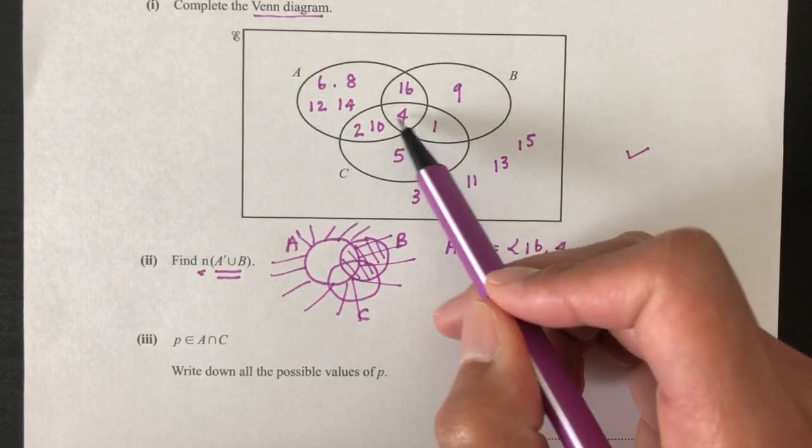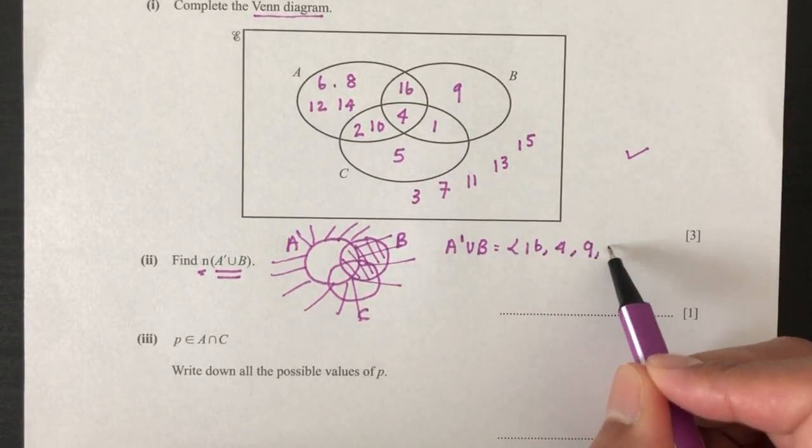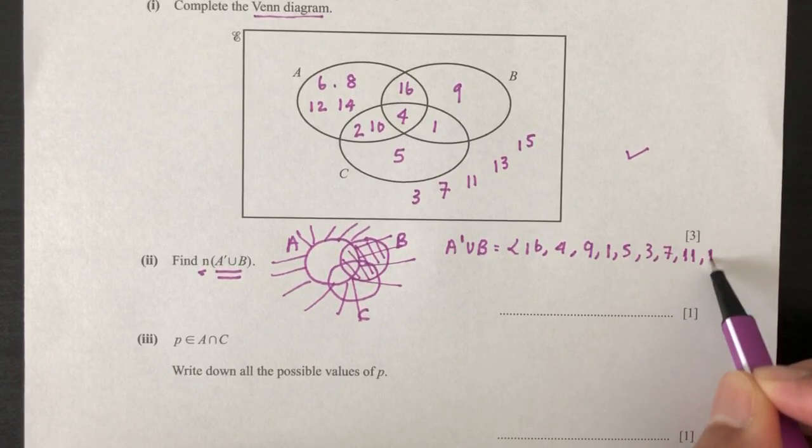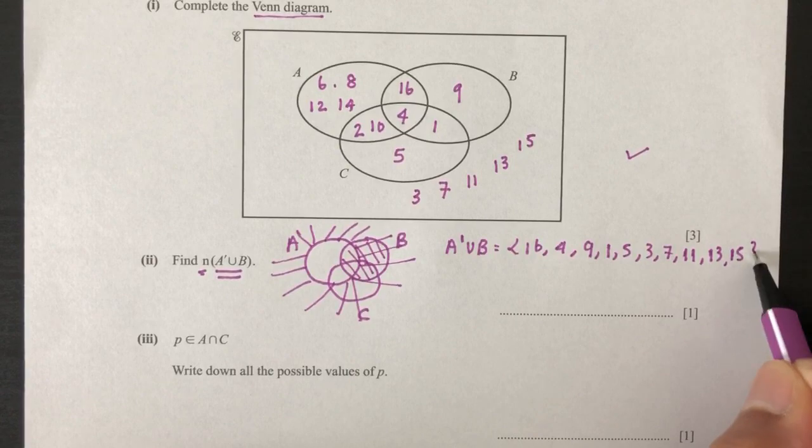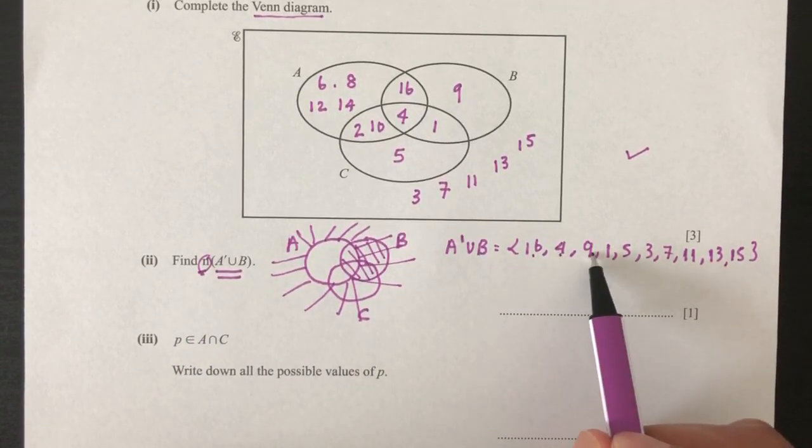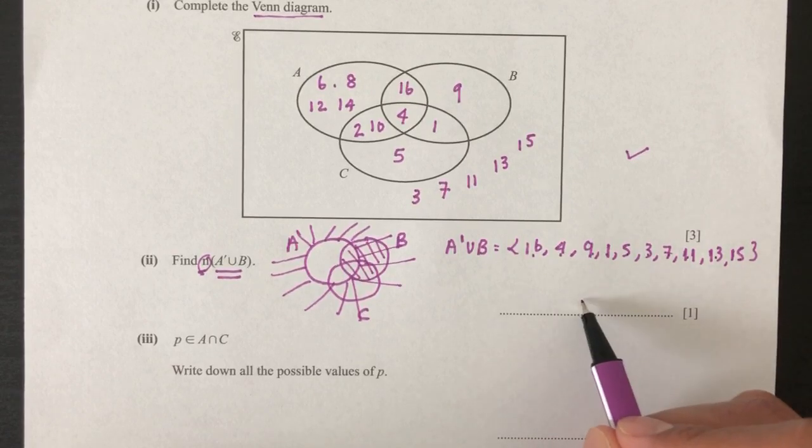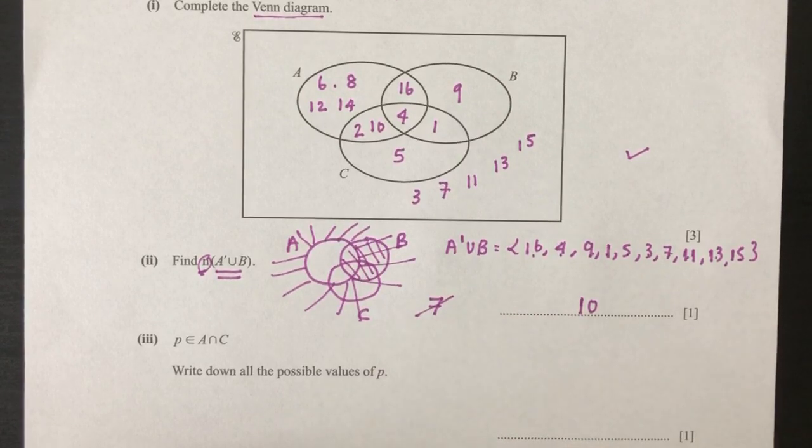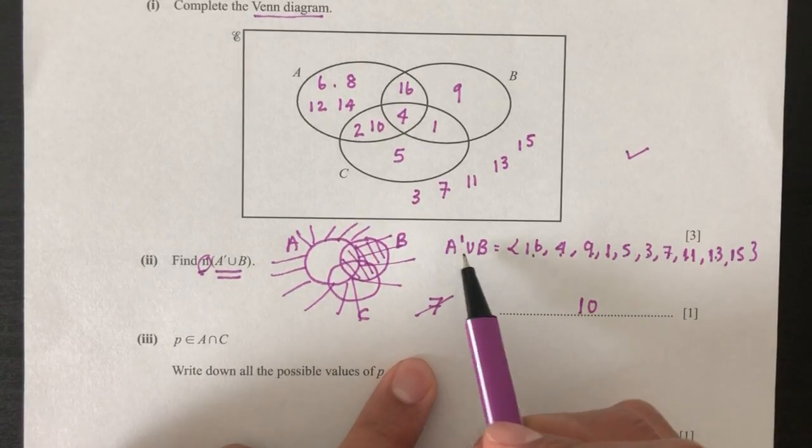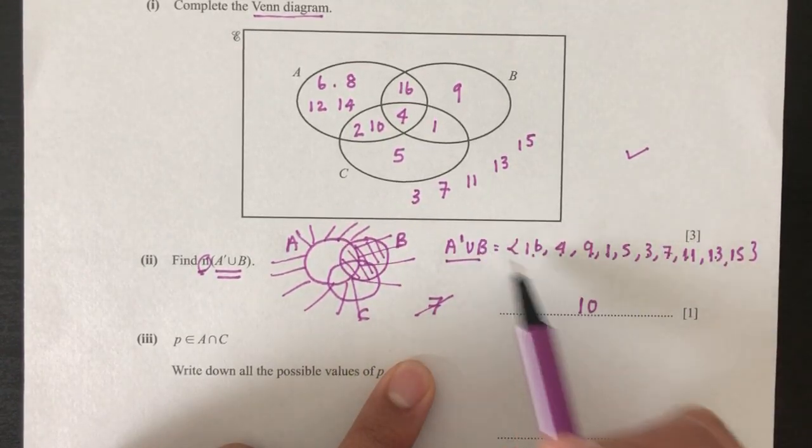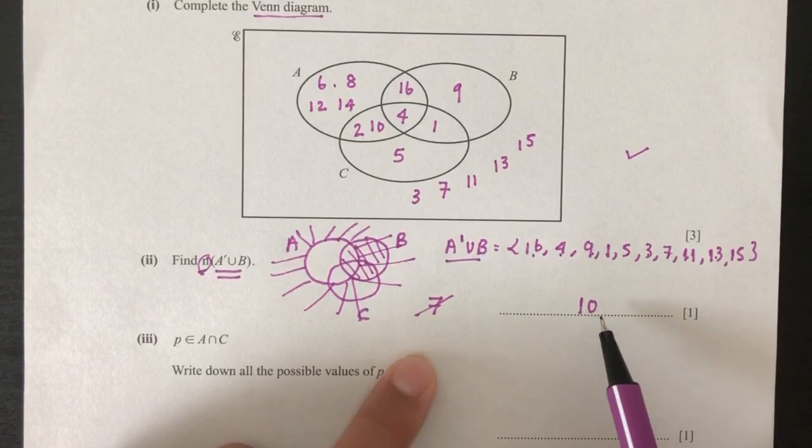So basically you will have A union B is your set 16, 4. You have to add these two and then 9, 1, 5, 3, 7, 11, 13, 15. So now we have to find the number of elements which is 1, 2, 3, 4, 5, 6, 7, 8, 9, 10. Your answer is 10. I think I put 7 which is not good. It should be 10. So my only mistake was this set. I did not shade the correct set. So this should be these values and the number should be 10 and not 7.